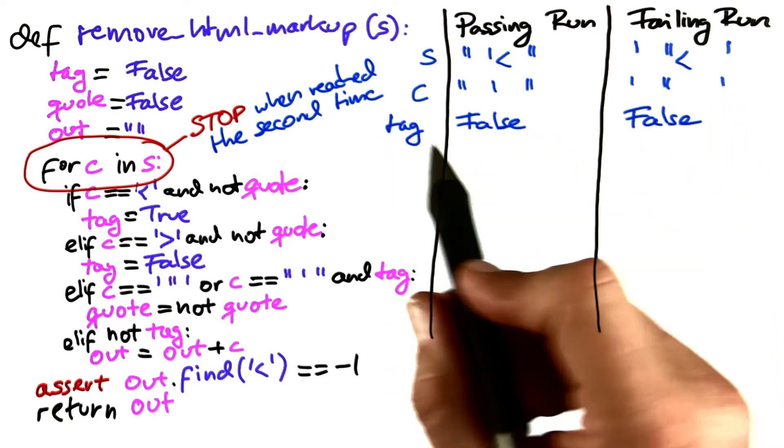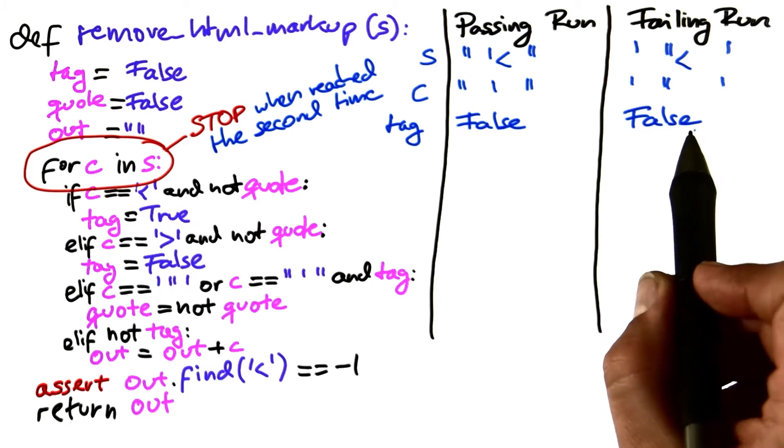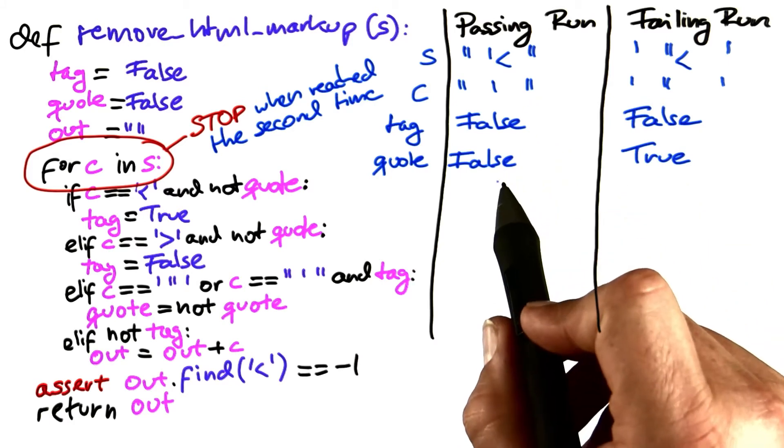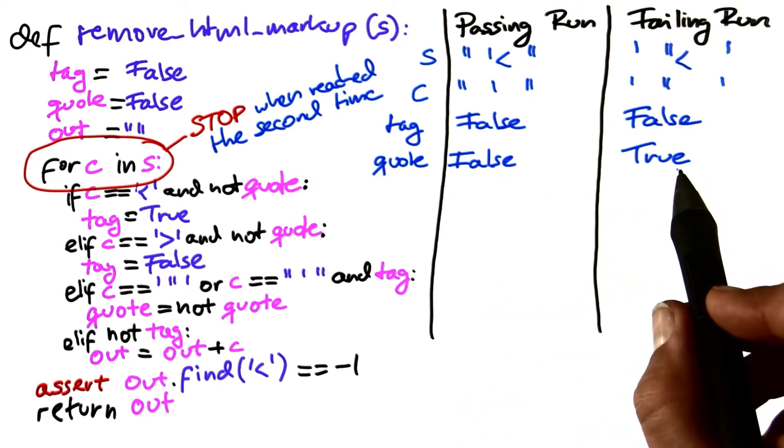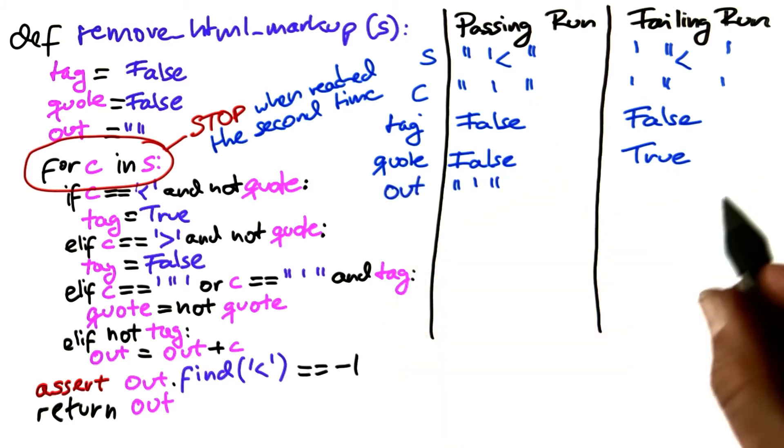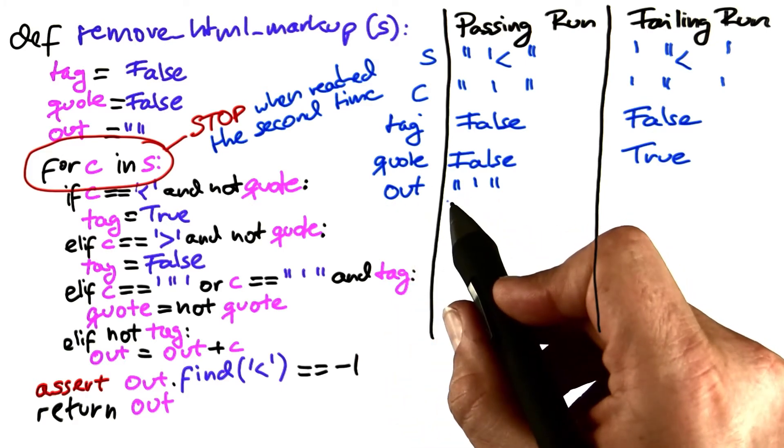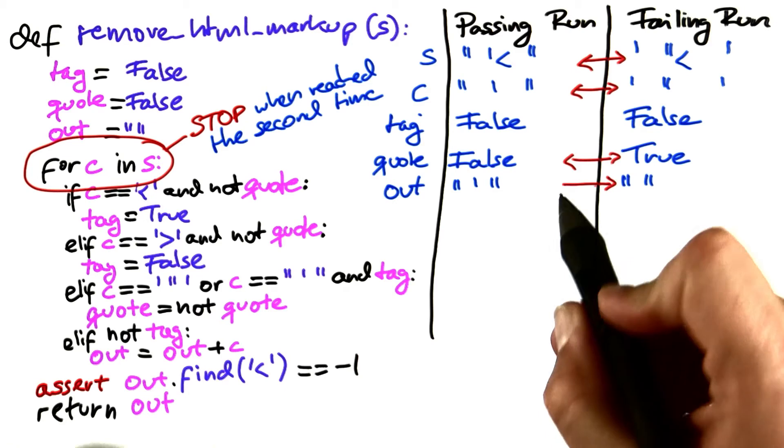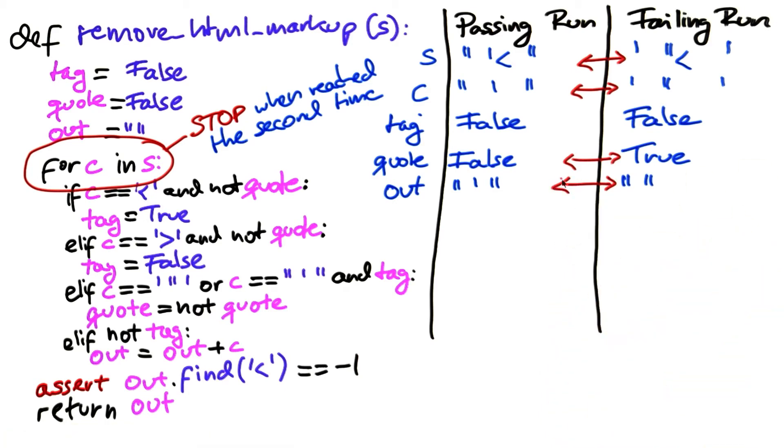The variable tag is false in both cases. The variable quote is different. In the passing run, it is false. In the failing run, it is true. In the passing run, the out variable contains a single quote, whereas in the failing run, the out variable is empty.